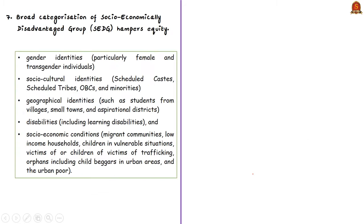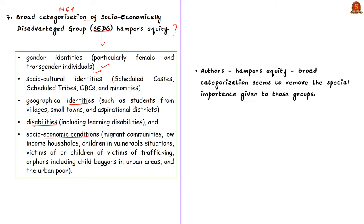The final and important concern is whether the new education policy's broad categorization of socio-economically disadvantaged groups hampers equity. According to the policy, SEDGs can be broadly categorized based on gender identities, socio-cultural identities, geographical identities, disabilities, and socio-economic conditions. The authors agree that this hampers equity because the disadvantaged groups are disadvantaged due to historical backwardness caused by caste and religious inequalities, and this broad categorization seems to remove the special importance given to these groups. As a conclusion, authors hope that the new education policy will understand diverse social realities and diverse disadvantages and exclusions in society, and will try to retain their special treatment.